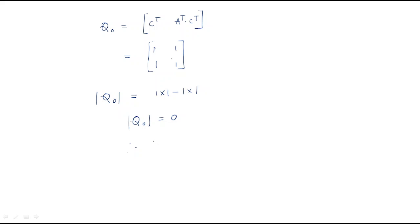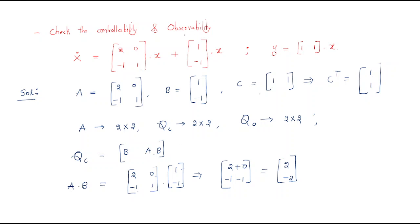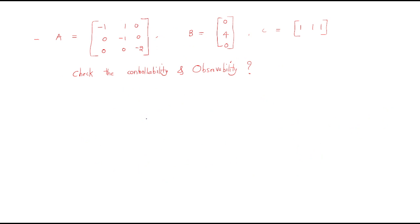The determinant of Q_0 equals 0. Whenever the determinant of Q_0 equals 0, the system is not observable. So in this question, after all calculations, the system is not observable as well as not controllable.